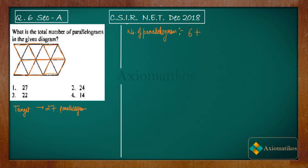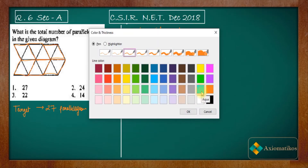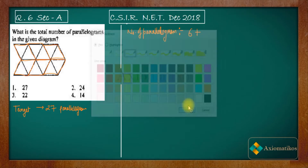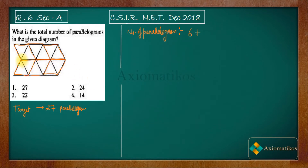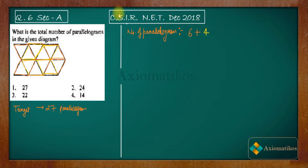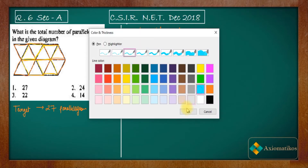Now let us change the color of the pen to yellow to understand it properly. If you look at it differently, you will get different parallelograms. Two are these and two are these, so you will get two more. With the yellow color you get four parallelograms.